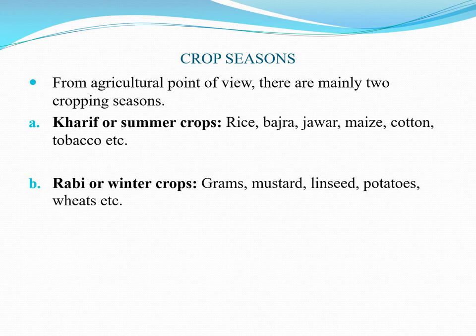Next are crop seasons. From the agricultural point of view, there are mainly two cropping seasons. The first is Kharif or summer crops, and the second is Rabbi or winter crops. Kharif crops require more water than Rabbi crops and include rice, bajra, jowar, maize, cotton, tobacco, etc.